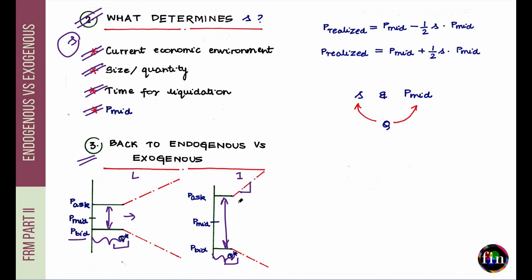Now the key difference between endogenous and exogenous: exogenous liquidity is served to you on a platter — controlled by factors beyond your control. S is still random, but it is not determined by your own actions. It is determined by the market, and you simply come and act on it.